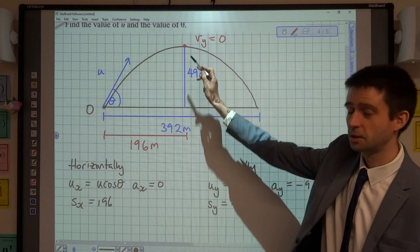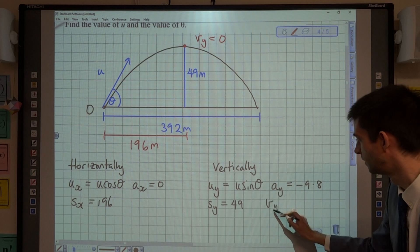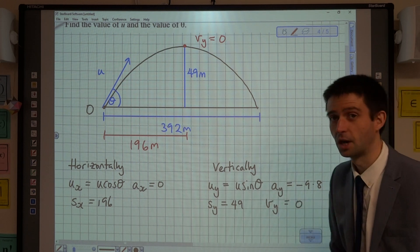And because we're looking at this point here, where the particle is at its greatest height, we know that the velocity in the vertical direction is zero.